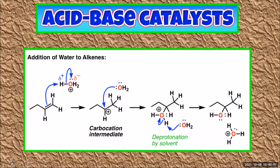Acid-base catalysts either donate or remove a proton from one of the reactants. This usually makes it more likely that the reactive site on the reactant is going to collide with that other reactant. This example shows the use of an acid catalyst in the reaction between an alkene — that's a hydrocarbon with a double bond — and water.